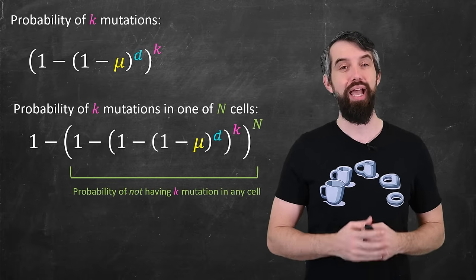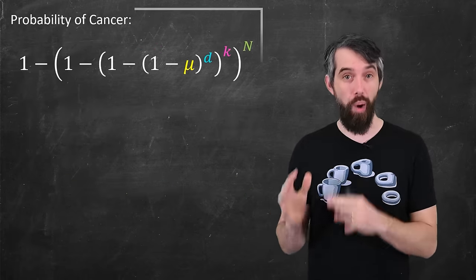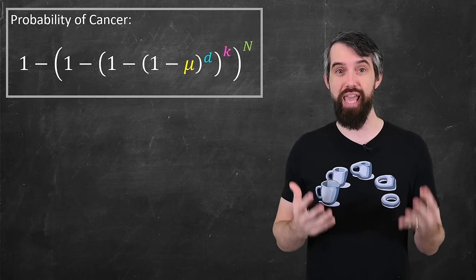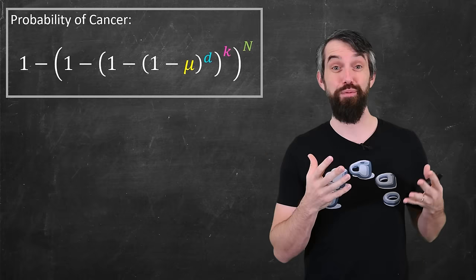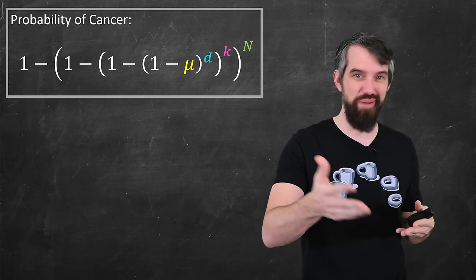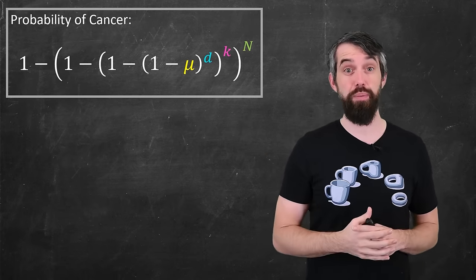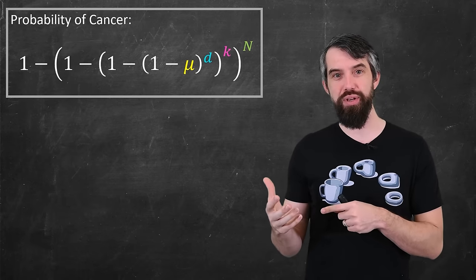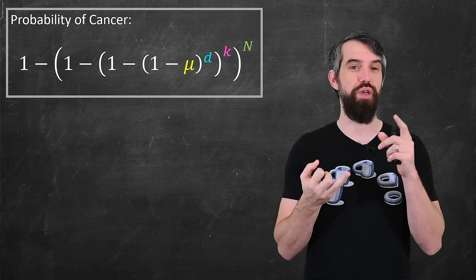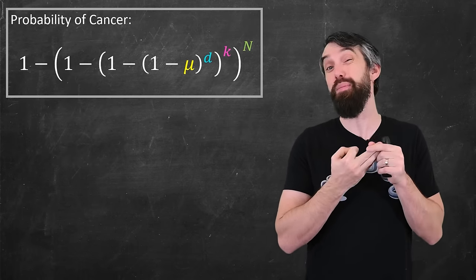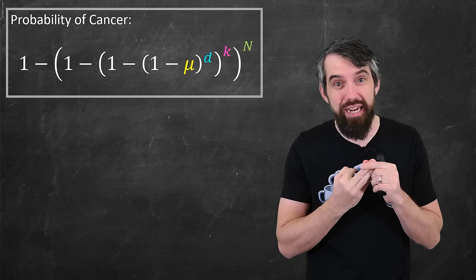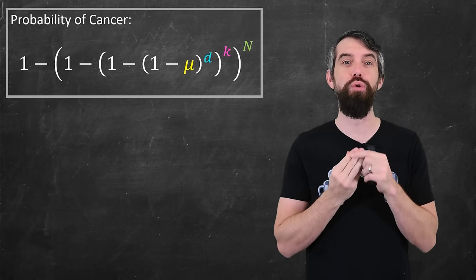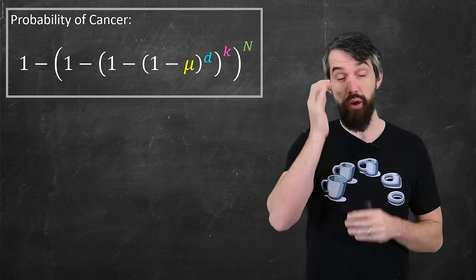And this creates an algebraic model of the probability of getting cancer. And if you look at this messy formula of the 1 minus, 1 minus, all of that, it's basically just a probability counting argument. It's separating it out into the mutation rate mu, the number of divisions d, the number of critical mutations you need in a cancer k, and the total number of stem cells.